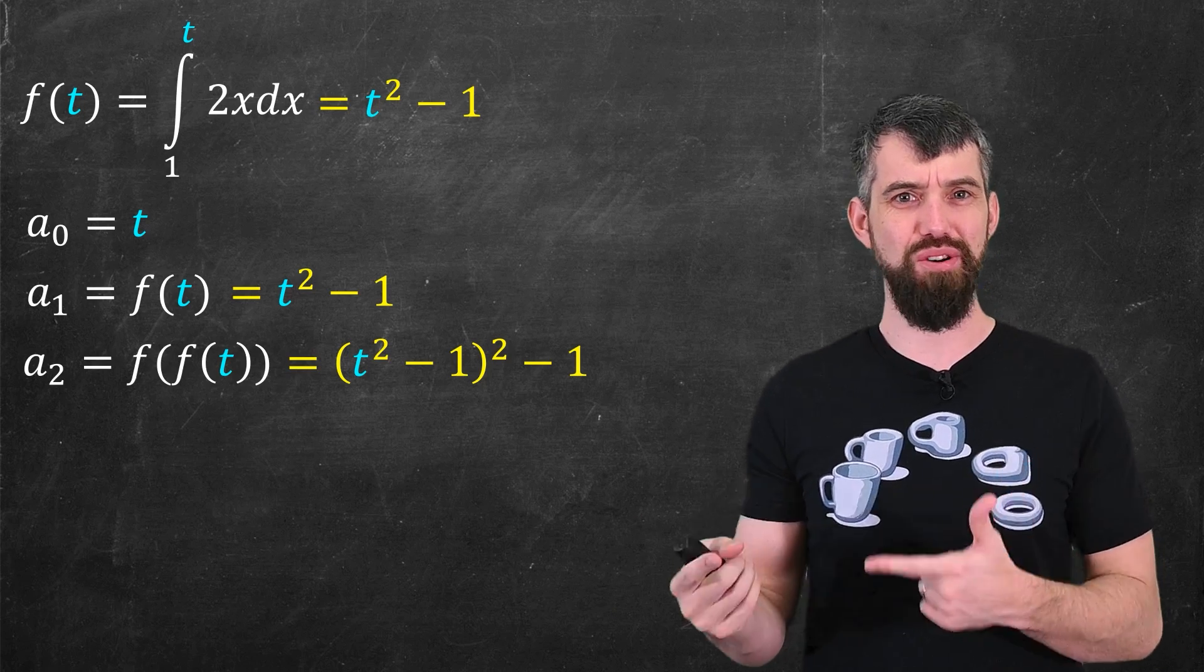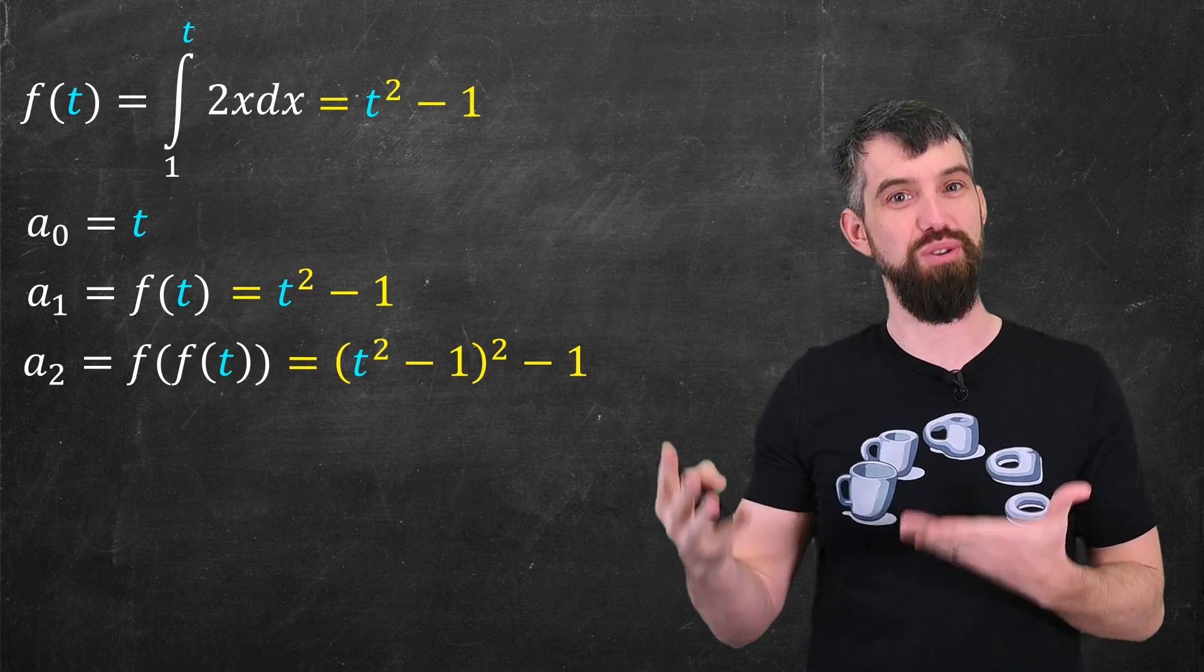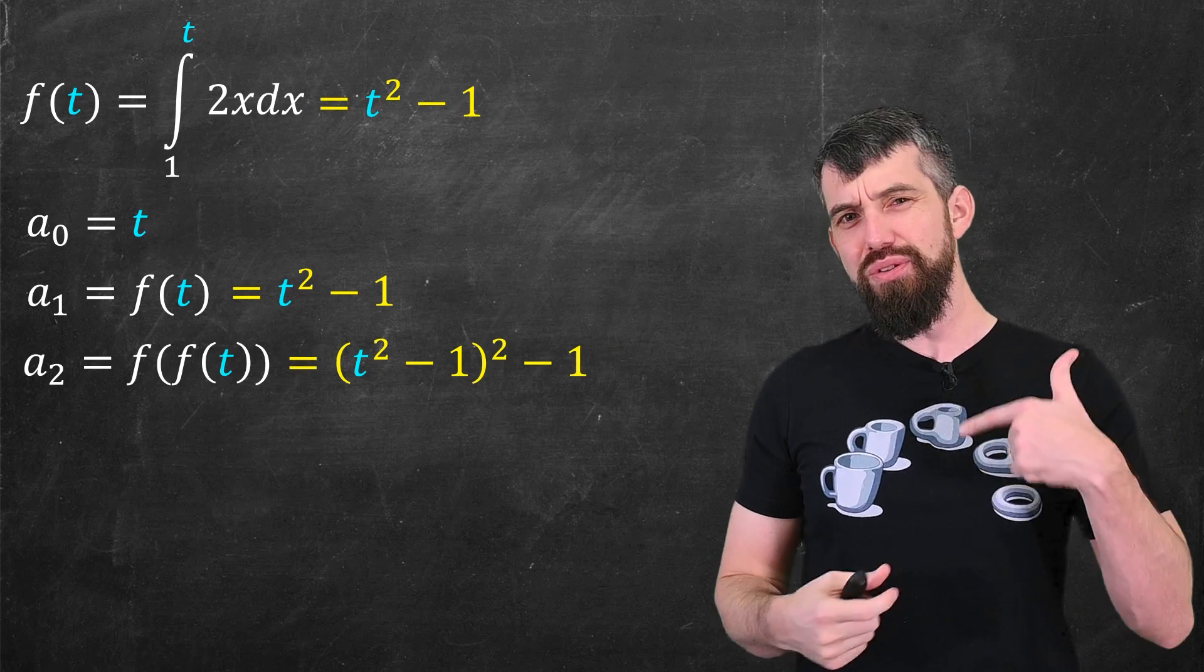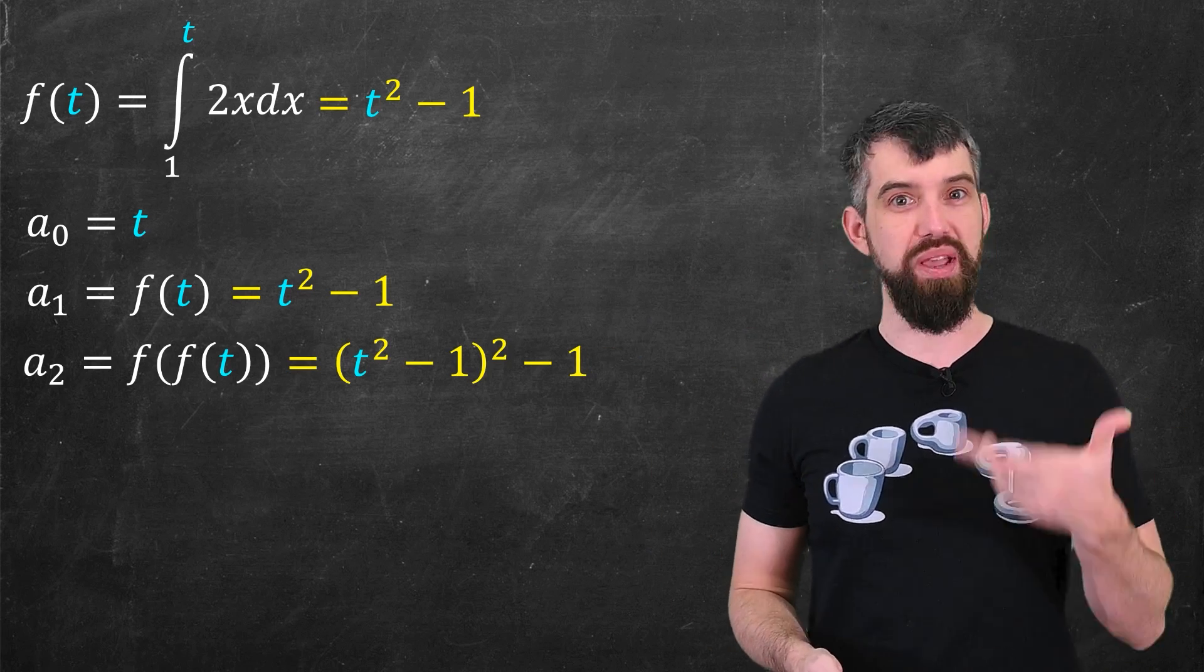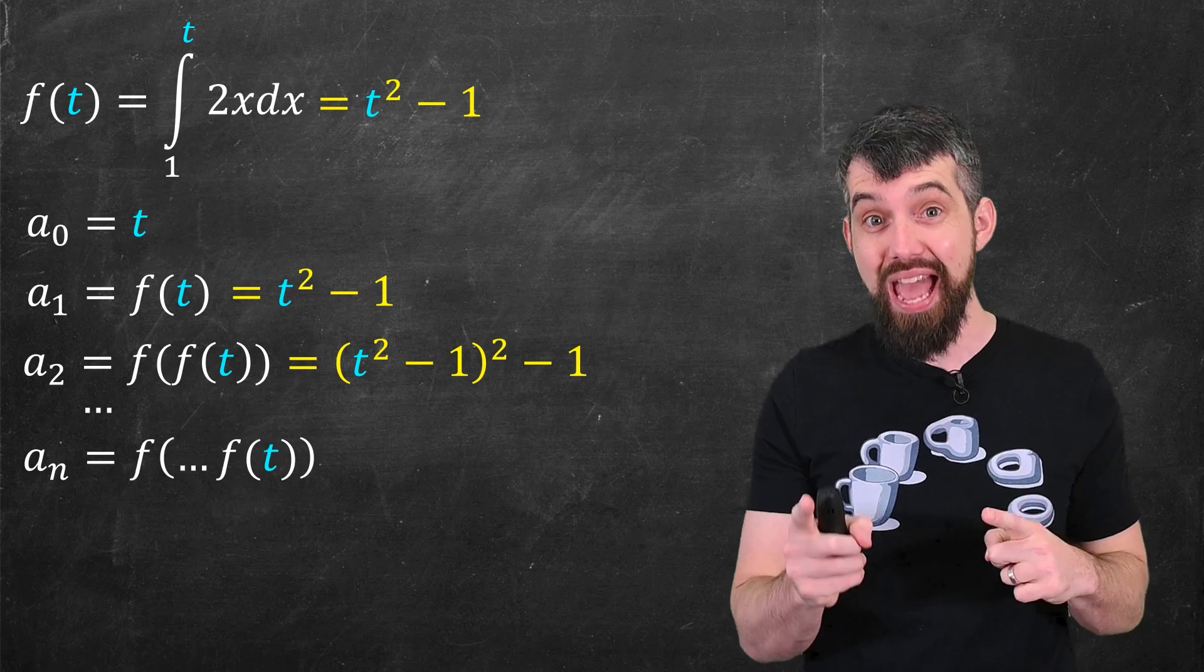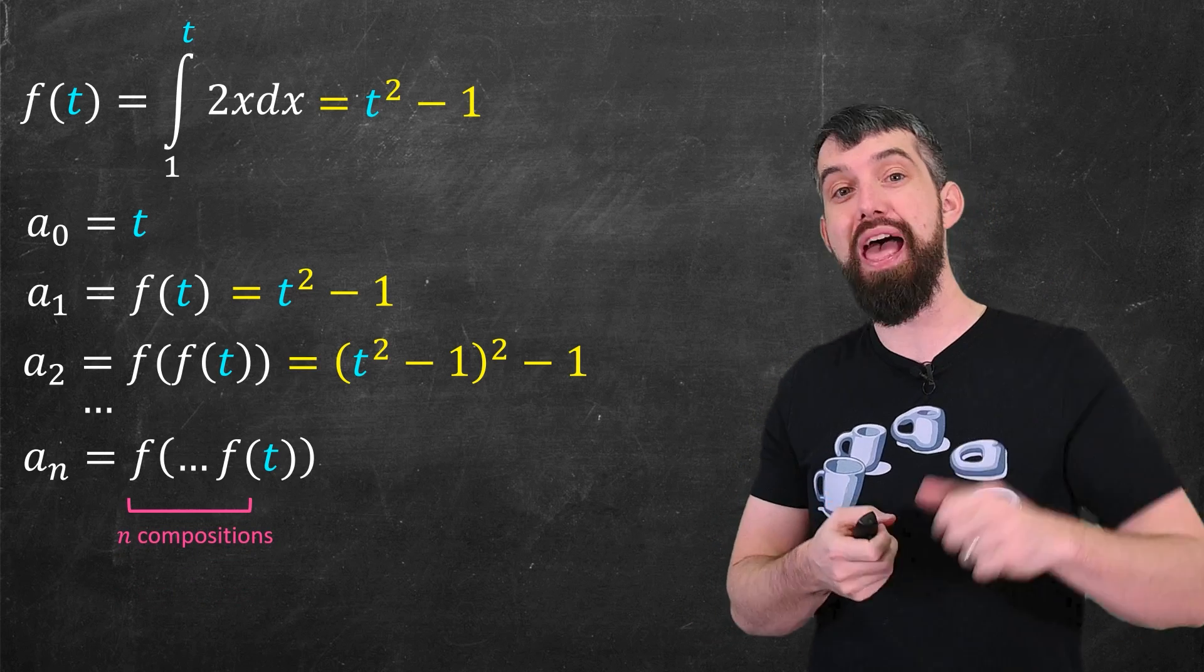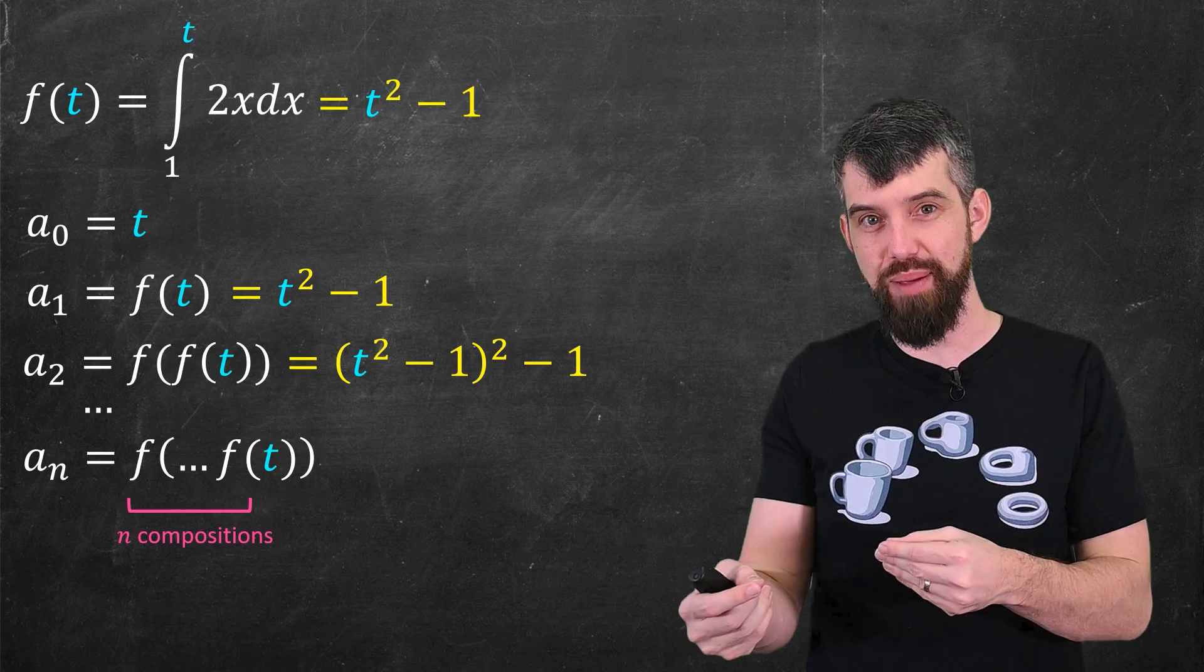And this would be just like taking the integral from 1 up to t, with the two different integrals. And you can carry on in this way. You can do an a₃ and an a₄. And in general, you could imagine having an aₙ, which was just n different iterations of that function. You did a composition n times.